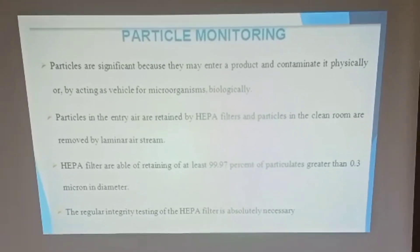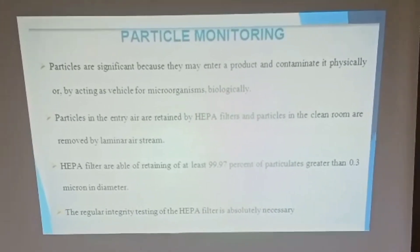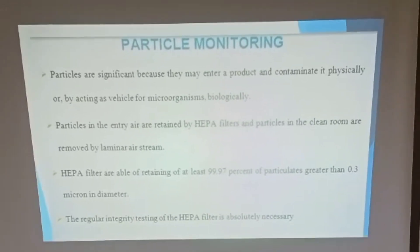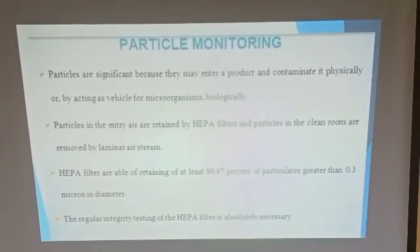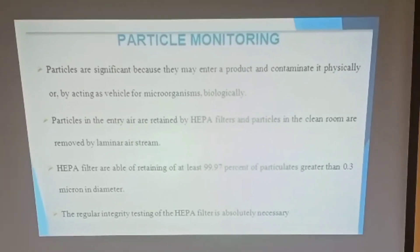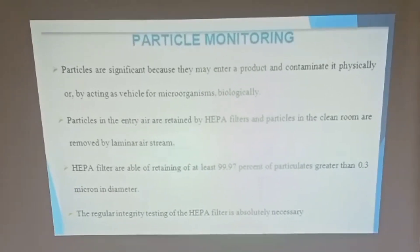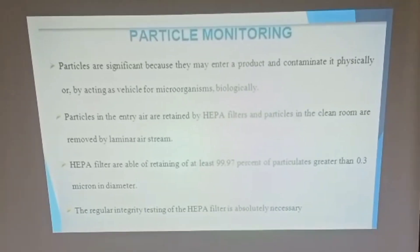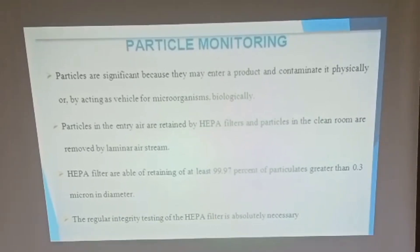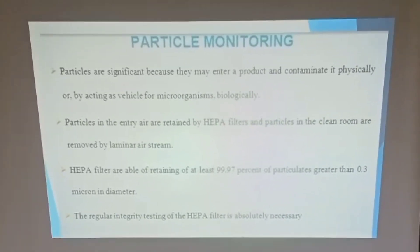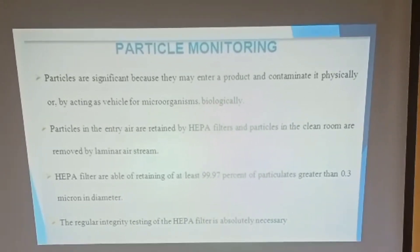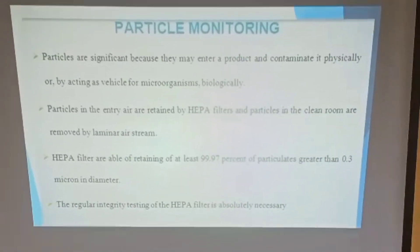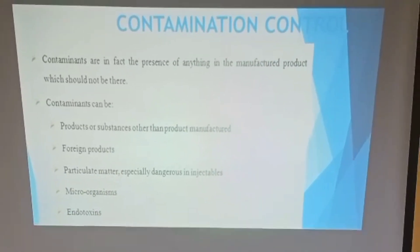The second classification of environmental monitoring is particle monitoring. Particles are controlled because they may contaminate a product physically or by acting as a vehicle for microorganisms biologically. Particles in the air are retained by HEPA filters, and particles in the clean room are removed by laminar air streams. HEPA filters retain at least 99.9% of particulates greater than 0.3 microns in diameter, making regular integrity testing of HEPA filters absolutely necessary.